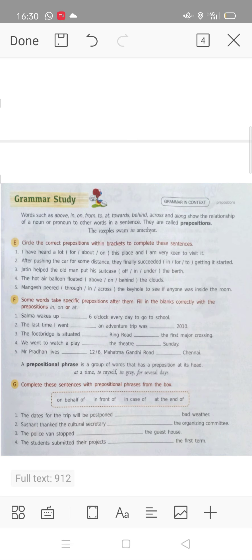Okay, now what do you have to do in exercise E? In exercise E, you have to circle the correct prepositions which you have in brackets. You have three options. Whatever is correct, you have to circle. Like the first example, 'I have heard a lot,' now what do you have to do?